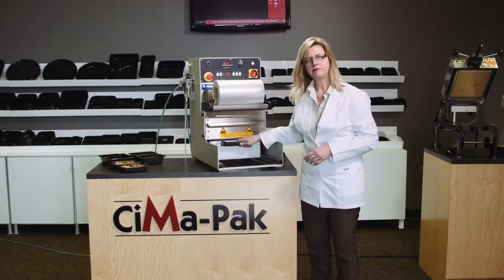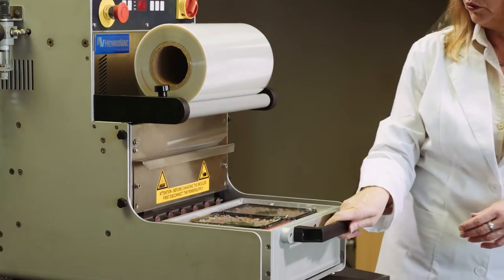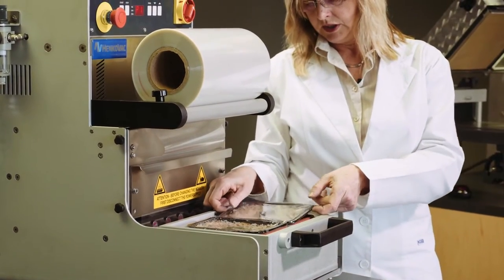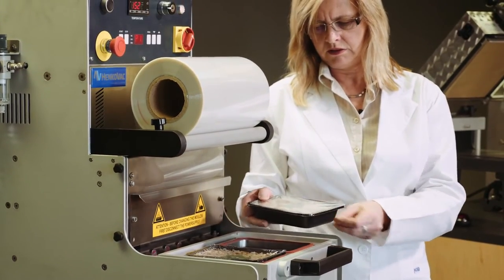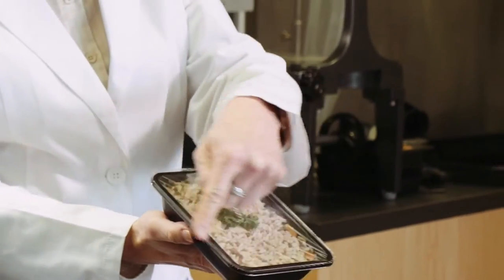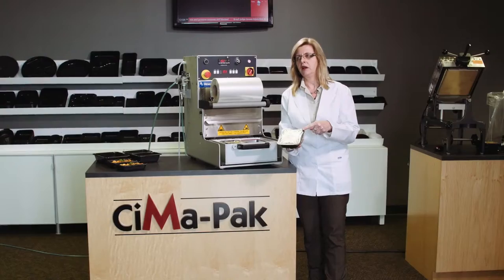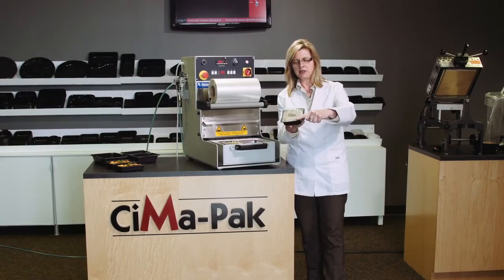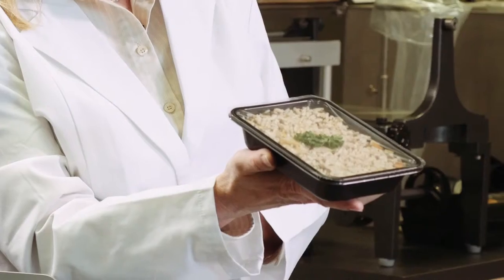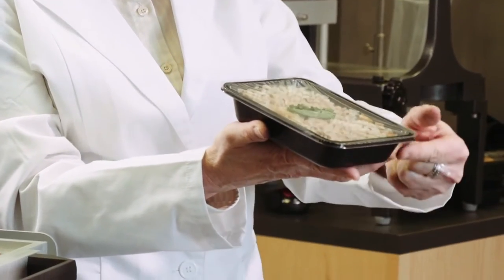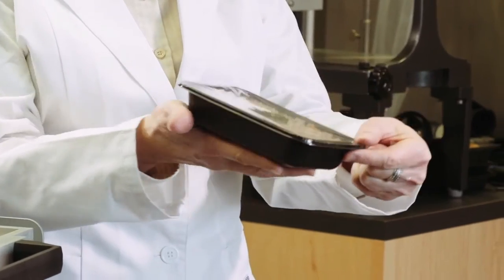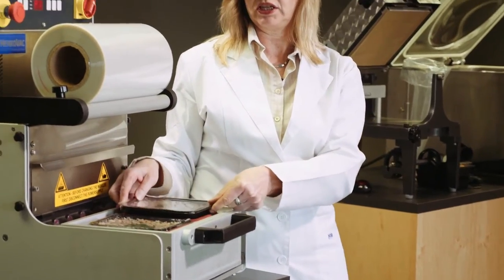We pull our trays out and we can see the film has been cut to the complete contour of the tray. There is a slight concave to it, so you know you have pulled the vacuum. The space you see inside is now filled with gas and not oxygen any longer.